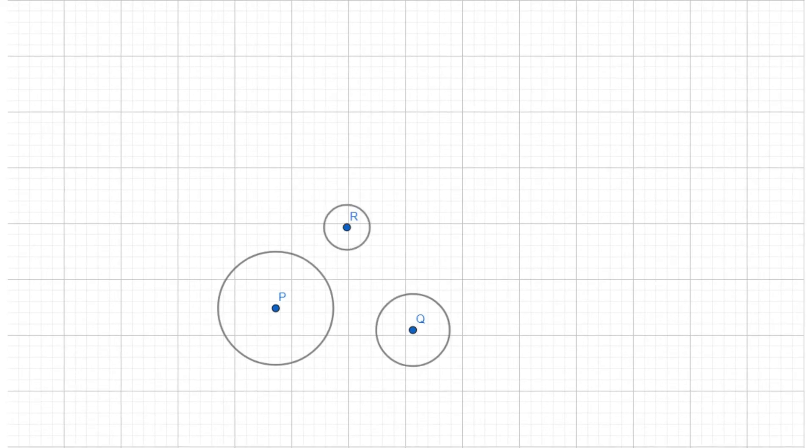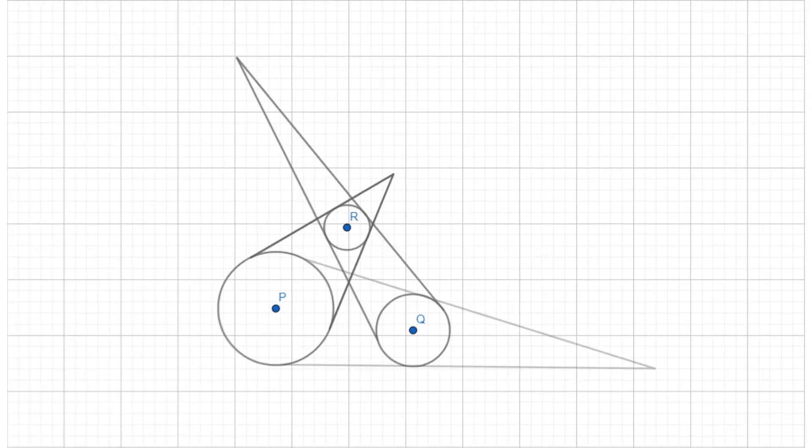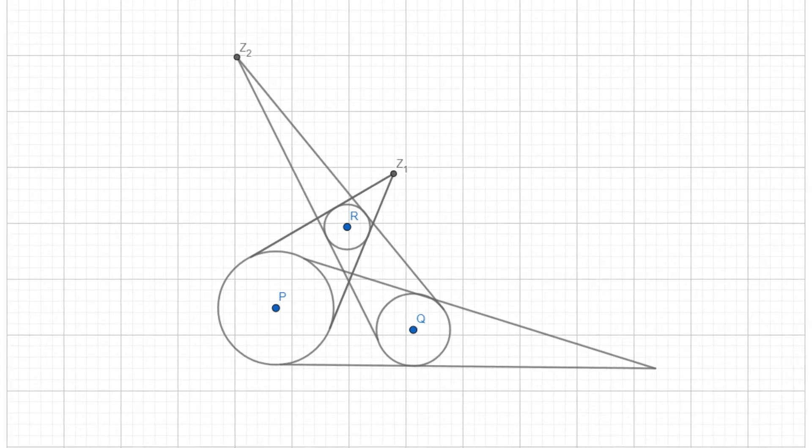Now suppose that we draw the three common external tangents to each pair of circles such that they intersected points outside. So we end up having one around circles P and R, Q and R, and P and Q. And again for this problem, let us label these points as Z1, Z2, and Z3.